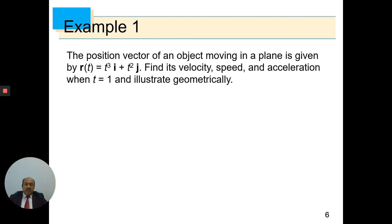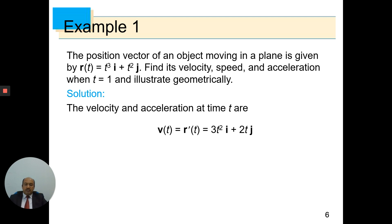Let's consider Example 1. The position vector of an object moving in a plane is given by the following formula. Find its velocity, speed, and acceleration when t equals 1, and illustrate geometrically. Solution: The velocity and acceleration at time t are obtained by differentiating r(t). The derivative of t³ becomes 3t², the derivative of t² becomes 2t, and the velocity vector is given by the following formula.